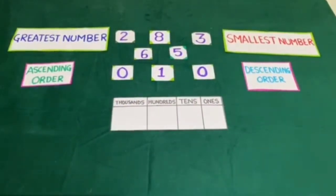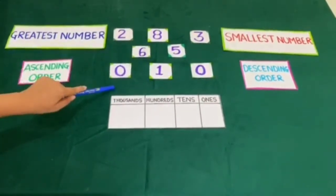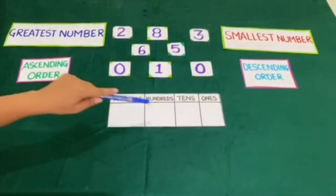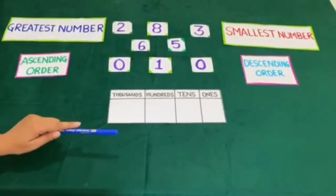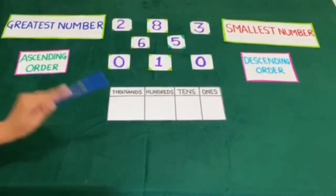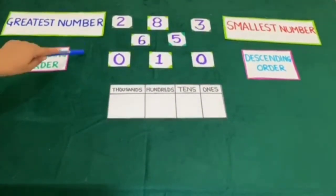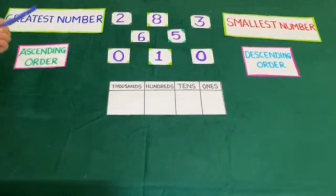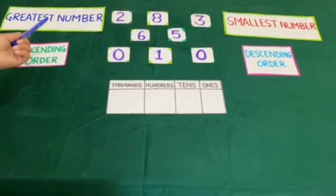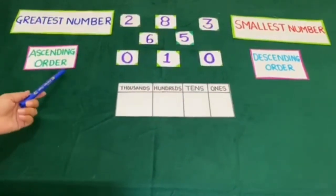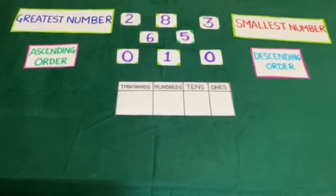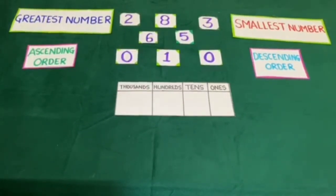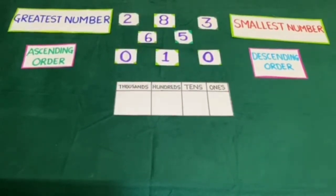Now you will make some digit cards, place them in a place value chart, make different numbers, do their comparison, find the smallest number and greatest number, arrange them in ascending order and descending order, and learn while having fun. Thank you.